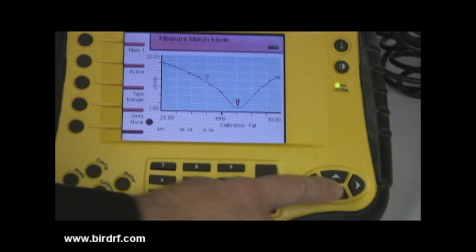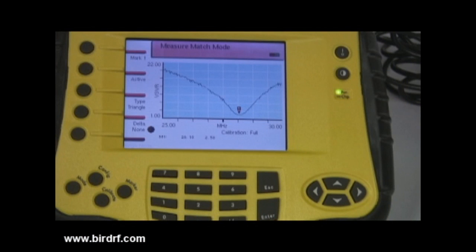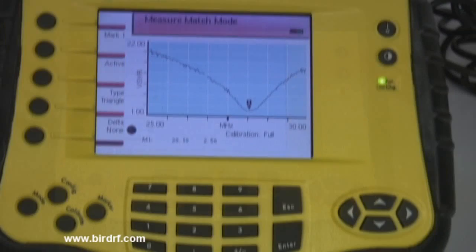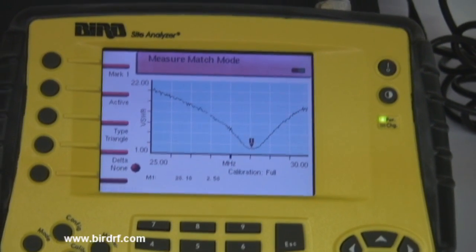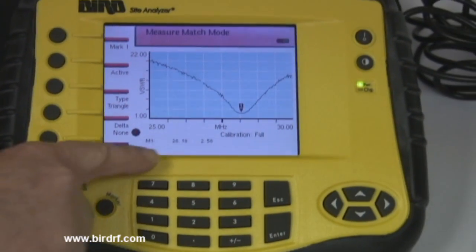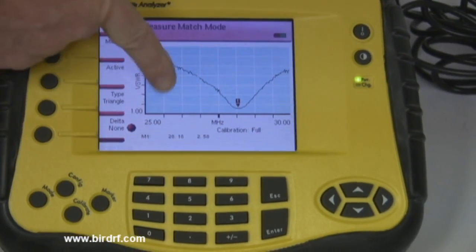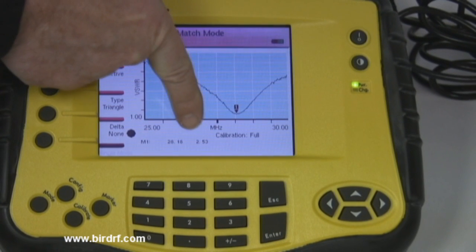Press the down arrow located on the bottom right hand side of the sight analyzer. This places the marker to the lowest point on the display, which in this case occurs at 28.18 MHz, where the VSWR is 2.53 for the antenna.